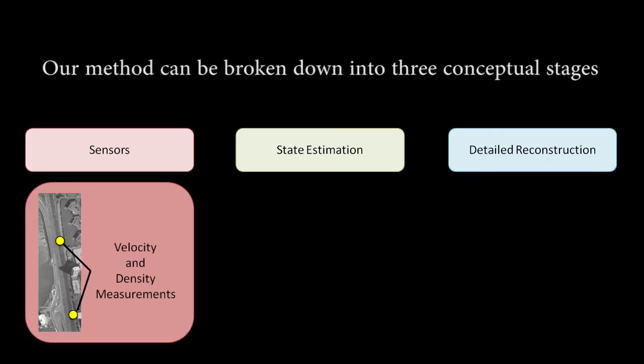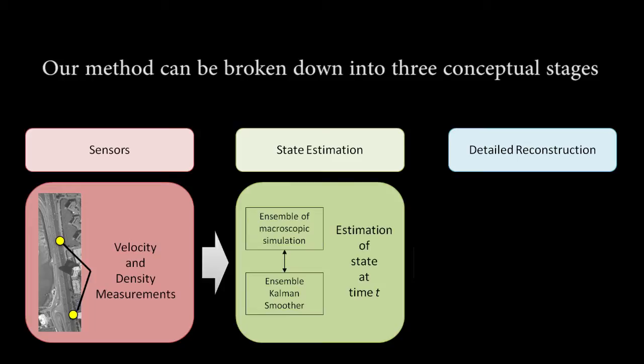Initially, keyframes are set for every lane in the road network. These keyframes consist of density and velocity readings, and can come from actual sensors or from synthetic user-defined controls. Using an Ensemble Kalman smoother and a macroscopic traffic model, we create a complete state estimate for each lane at every time frame.